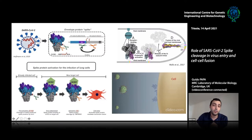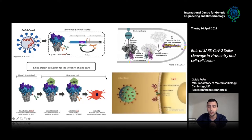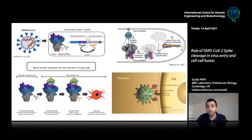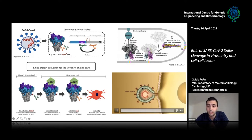So we have two different cleavage events: the first occurs during spike production at the S1/S2 site, and the second occurs after binding to the host cell receptor. This is illustrated in a video showing the viral particle attaching to the ACE2 receptor, TMPRSS2 cleaving the spike and releasing the S1 subunit, exposing the fusion peptide, and allowing the virus to fuse its membrane with the host cell membrane.